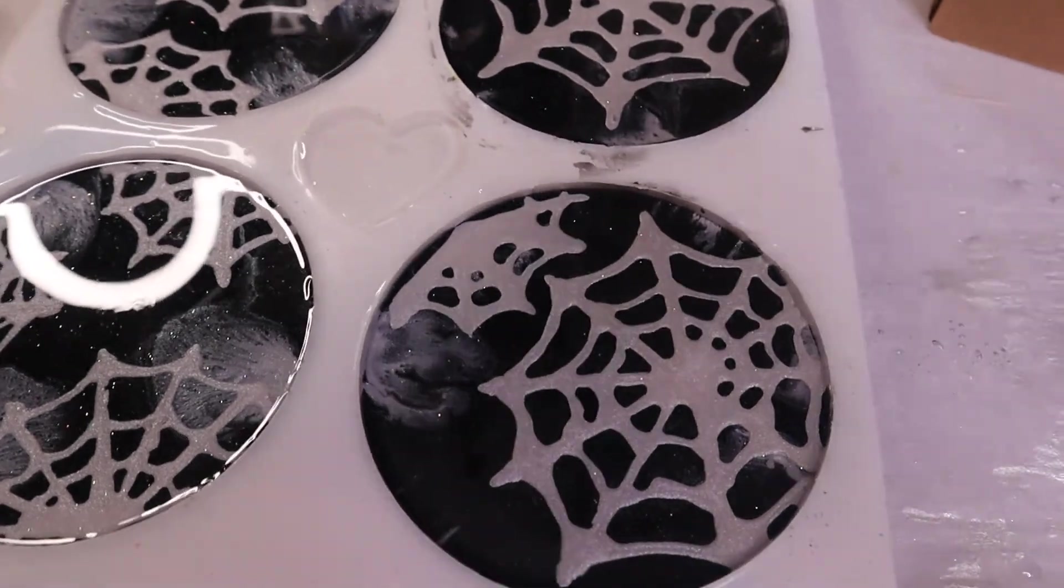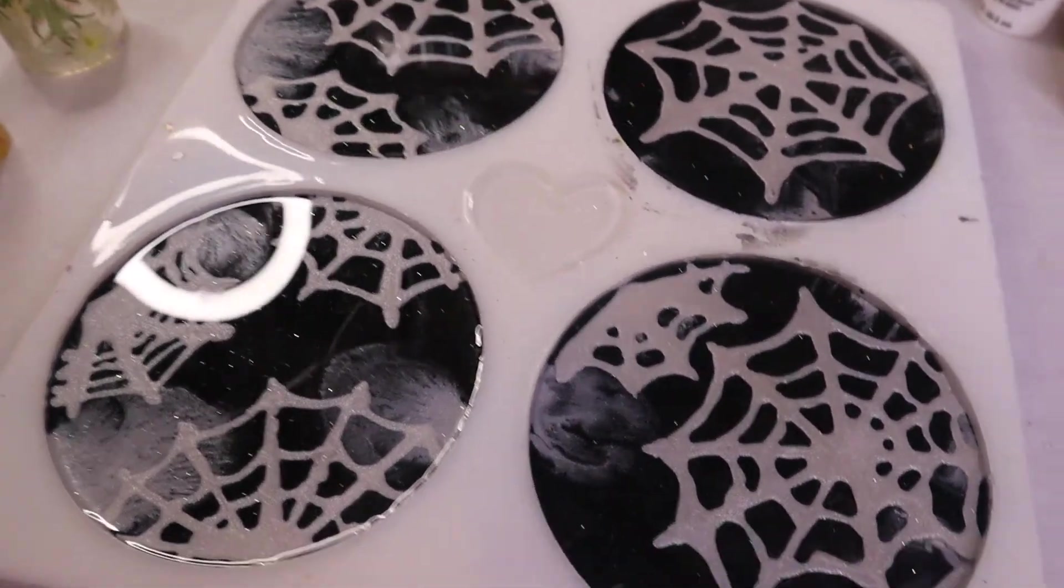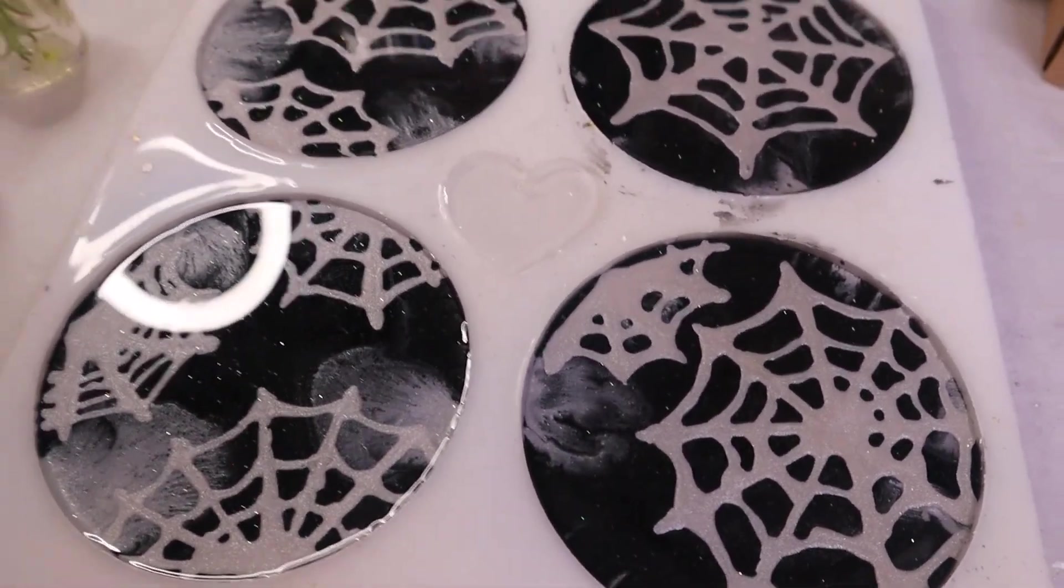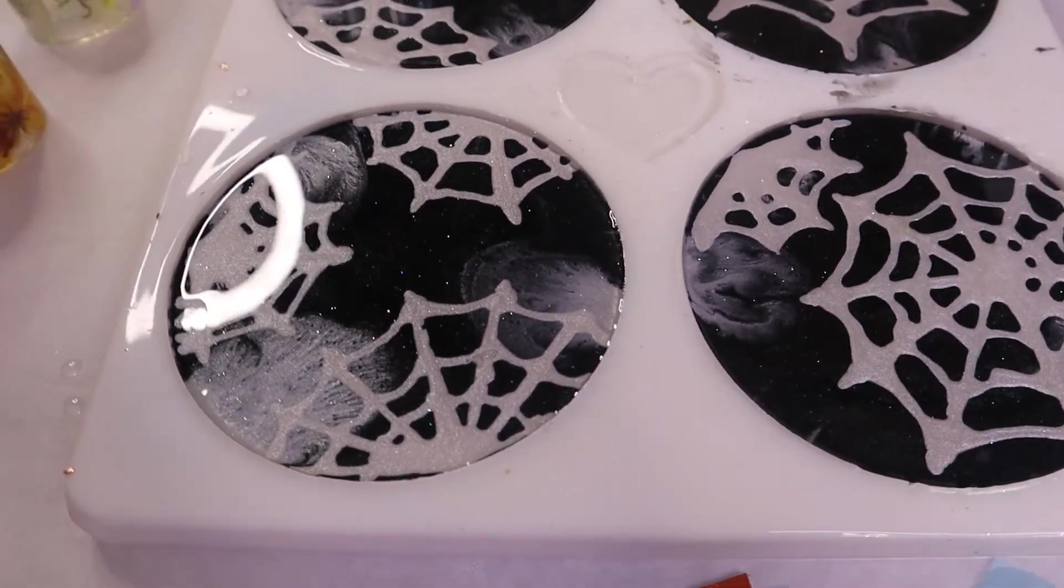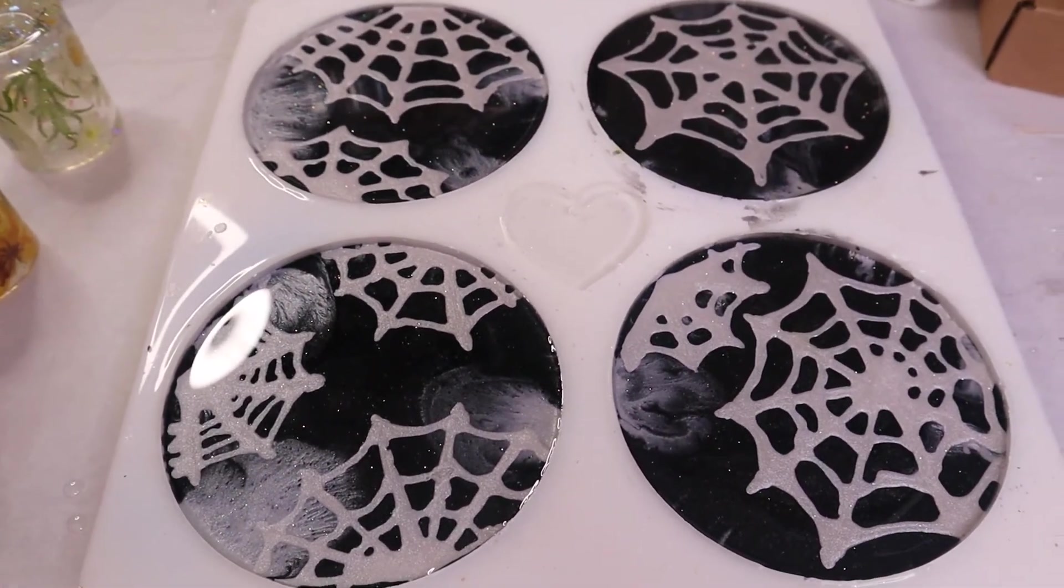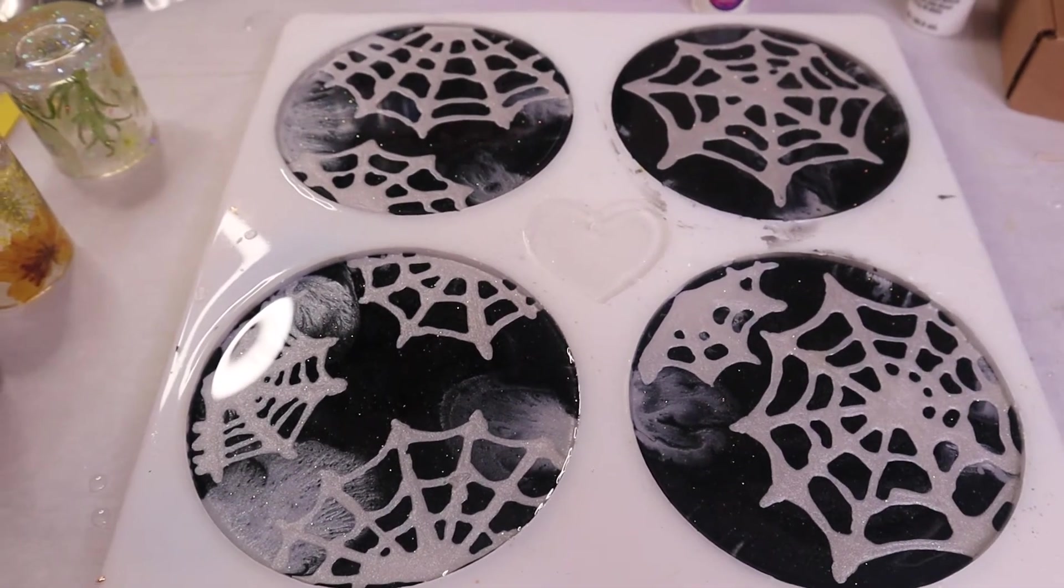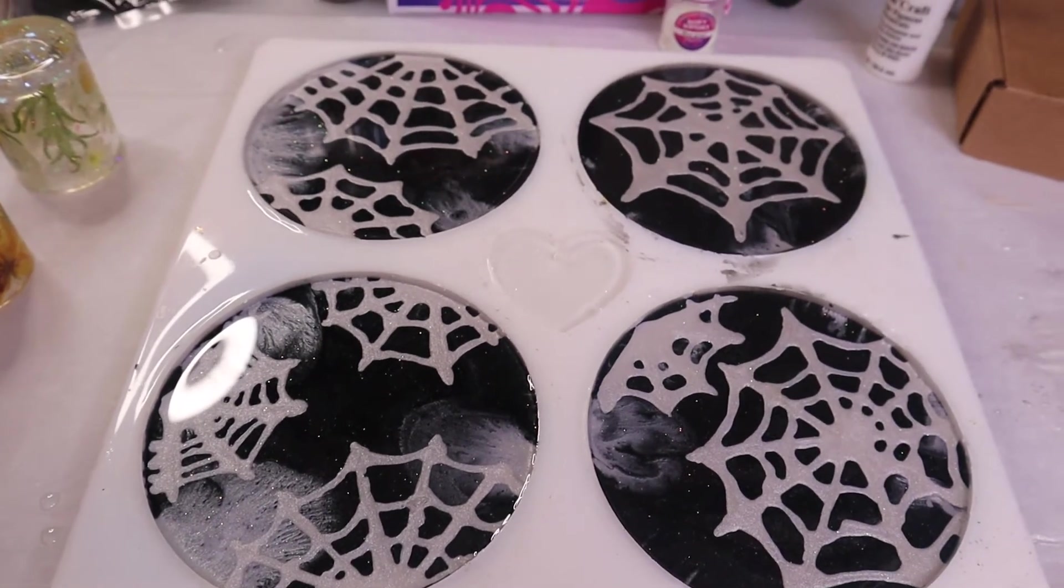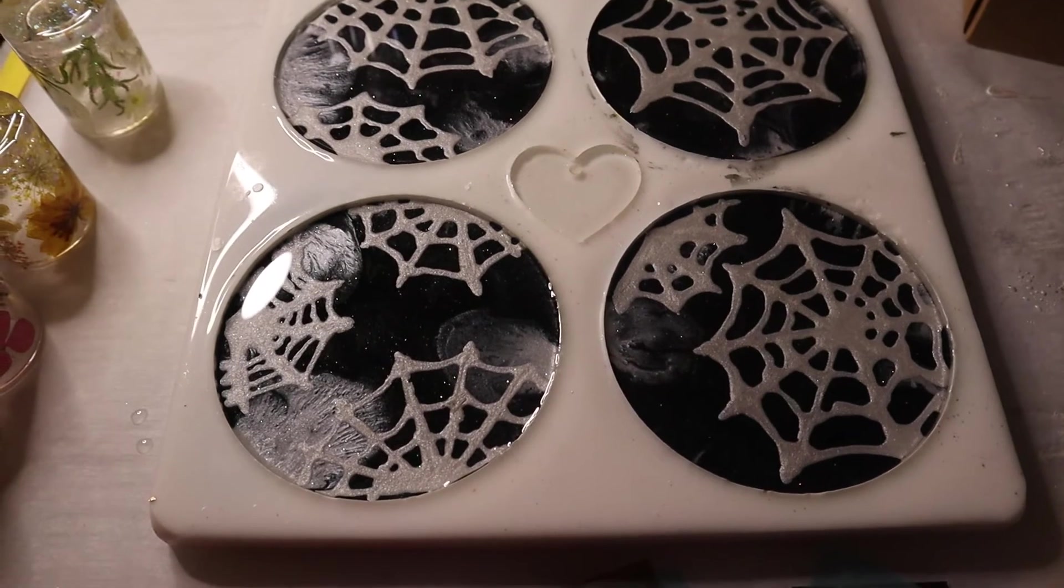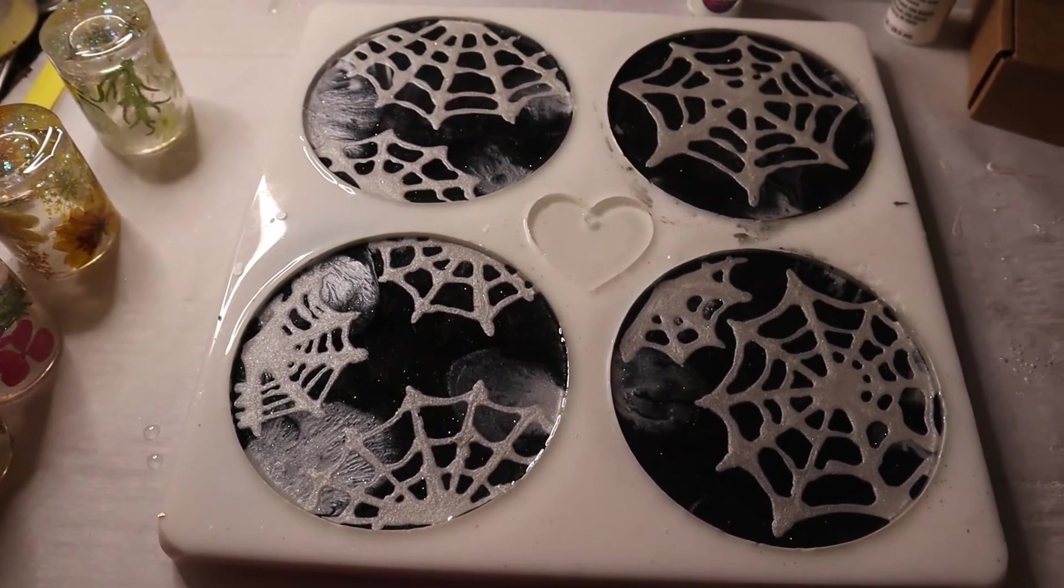But since I used the glow in the dark pigment powder at least, I want to do a reveal and see how it turned out. So I'm going to get all of the lights turned off and then we will see if it actually glows in the dark. I've got one last ring light back here that I'll turn off.